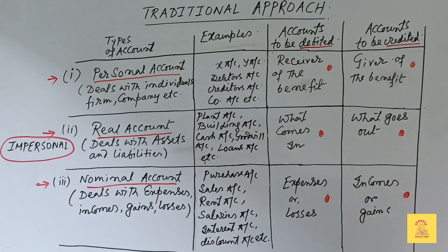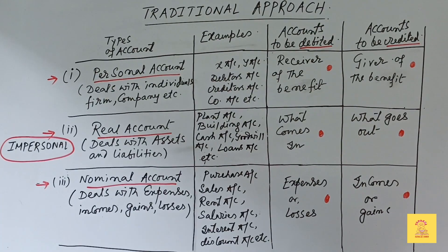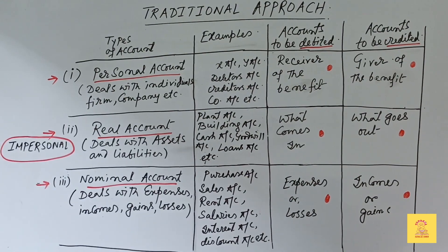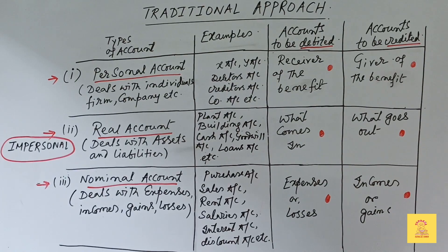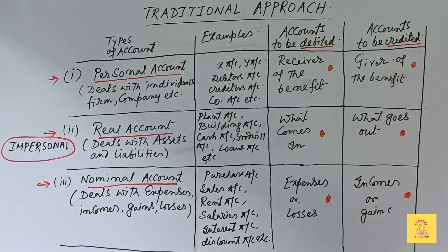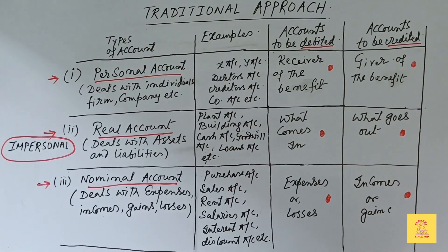First we will discuss the traditional approach of accountancy. In the traditional approach, it is the application of rules of accountancy which is popularly known as the golden rules of accountancy. Under this approach, the basic unit of recording is an account.